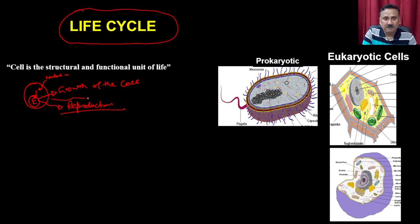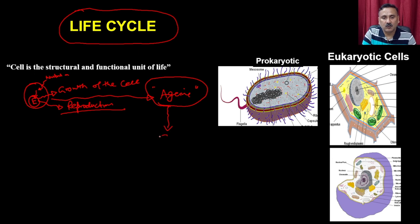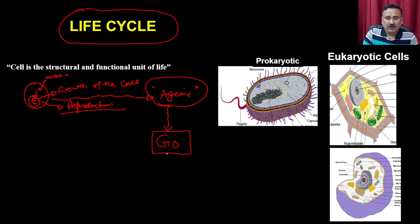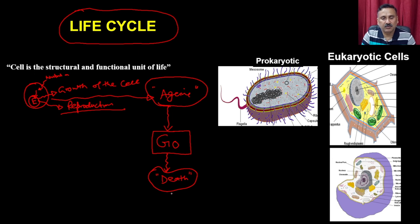After some time, when the cell goes through a process of aging, it will undergo different types of changes. One serious change is that it actually enters into a non-dividing phase called the G0 phase. Once it enters into the G0 phase, it will stop division and just maintain basal level of activities. After this, it will enter into another phase which is called the death phase, because every cell has a definite lifespan.